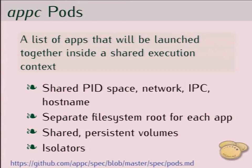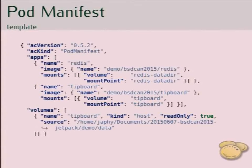The runtime is a pod. A pod is a list of applications, and a pod can run more than one application from more than one image. They will be launched in a shared execution context — they will share PID namespace, network, IPC, and hostname — but each application will have its own separate file system, so it is a chroot inside the jail. More precise isolation dependencies can also be specified in the image manifest or pod manifest as an isolator. The pod manifest for the demo has two applications: one is Redis, and we've just seen the image manifest for this image; the second is Tipboard, a monitoring dashboard.